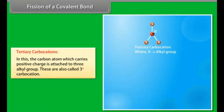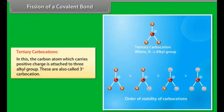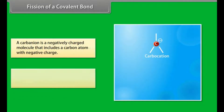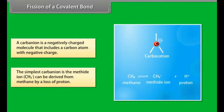Tertiary carbocations: the carbon atom which carries positive charge is attached to three alkyl groups; also called three degree carbocation. A carbanion is a negatively charged molecule that contains a carbon atom with negative charge. The simplest carbanion is the methide ion, which can be derived from methane by loss of a proton.